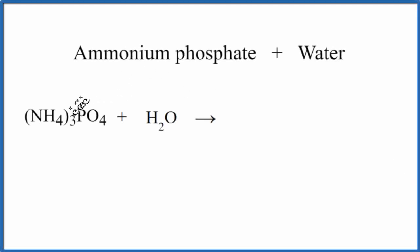In this video, we'll look at what happens when we put NH43PO4 plus H2O. This is ammonium phosphate plus water.